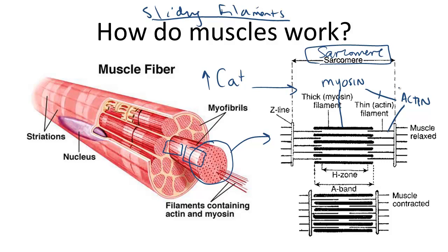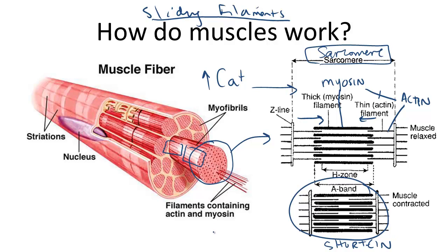When they attach, the myosin filaments drag the actin filaments to the center of the sarcomere, as you can see here. This causes the muscle to shorten or contract. ATP is necessary for this contraction.